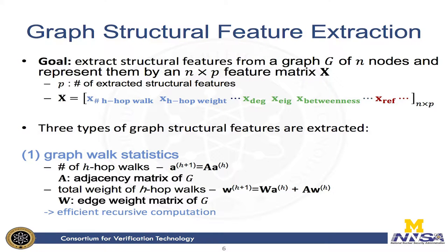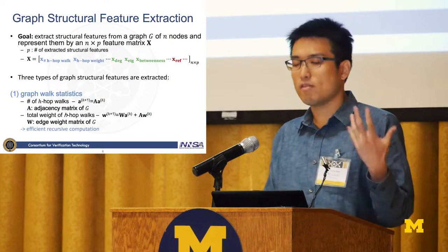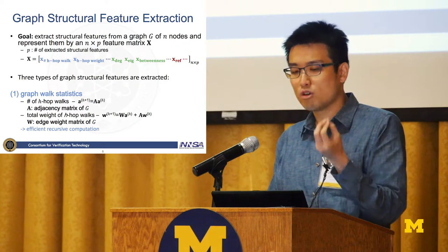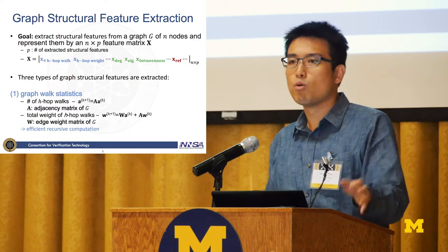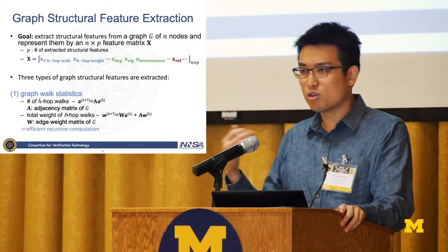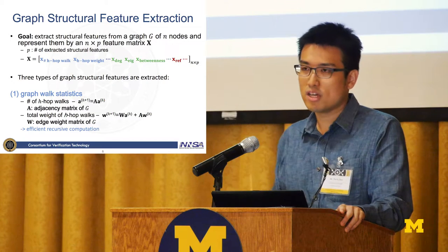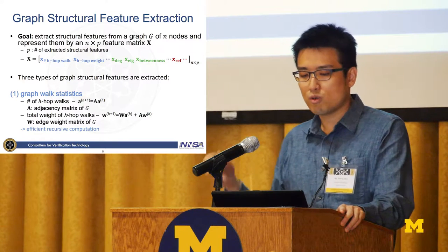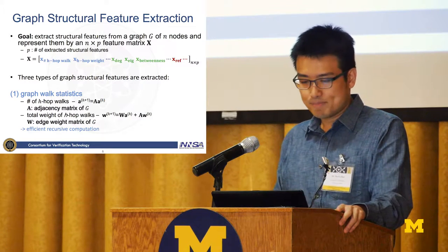Here is how graph structural feature extraction works. We start with a graph observation and extract structural features, representing them as an n-by-p feature matrix X, where n is the number of nodes and p is the number of structural features extracted. The first type is graph walk statistics — a local view of each node. We extract the number of H-hop walks from each node, stored as a vector representation. There is a recursive form: H-plus-one equals A times H, where A is the adjacency matrix of the graph.